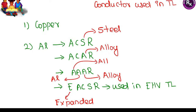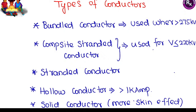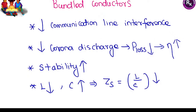Conductors used in transmission lines: copper and aluminium. For aluminium, different types include: ACSR (Aluminium Conductor Steel Reinforced), ACAR (Aluminium Conductor Alloy Reinforced), AAA (All Aluminium Alloy Reinforced), and AASR (Expanded Aluminium Conductor Steel Reinforced), used for extra high voltage transmission lines. Classifications of conductors include bundled conductor, composite standard conductor, standard conductor, hollow conductor, and solid conductor.